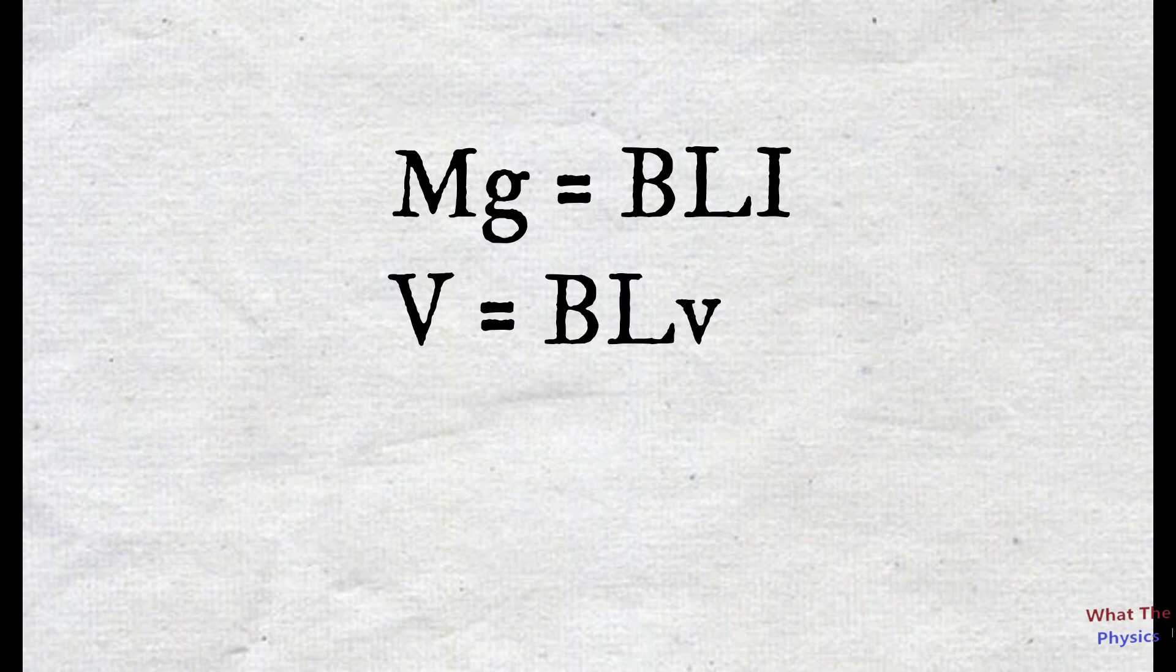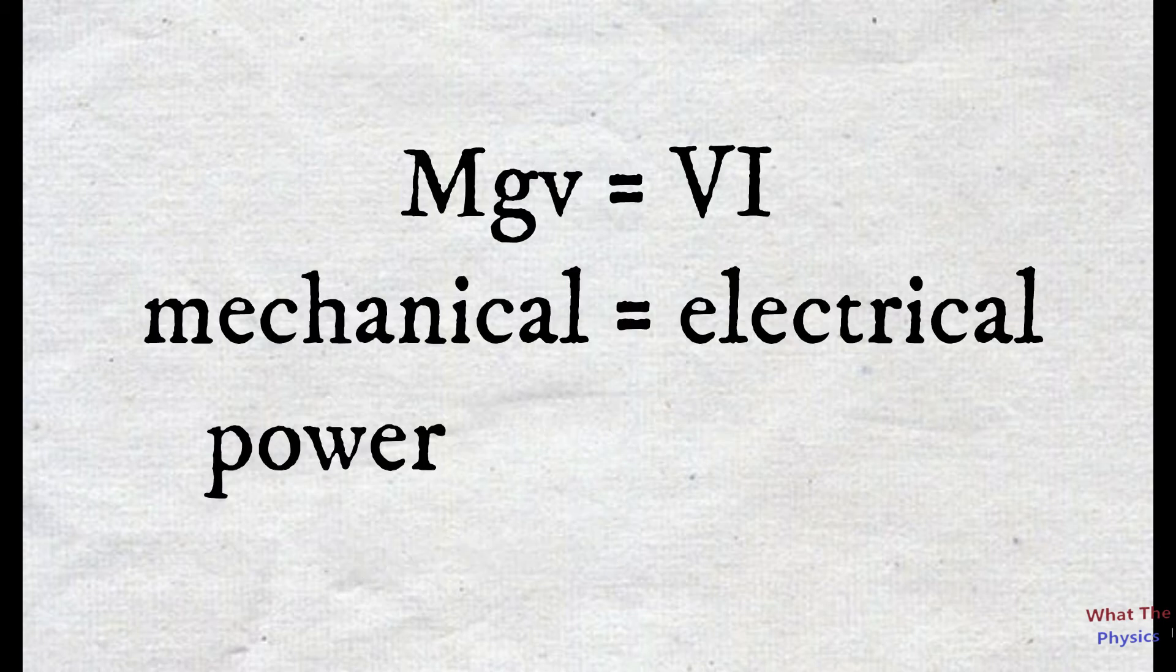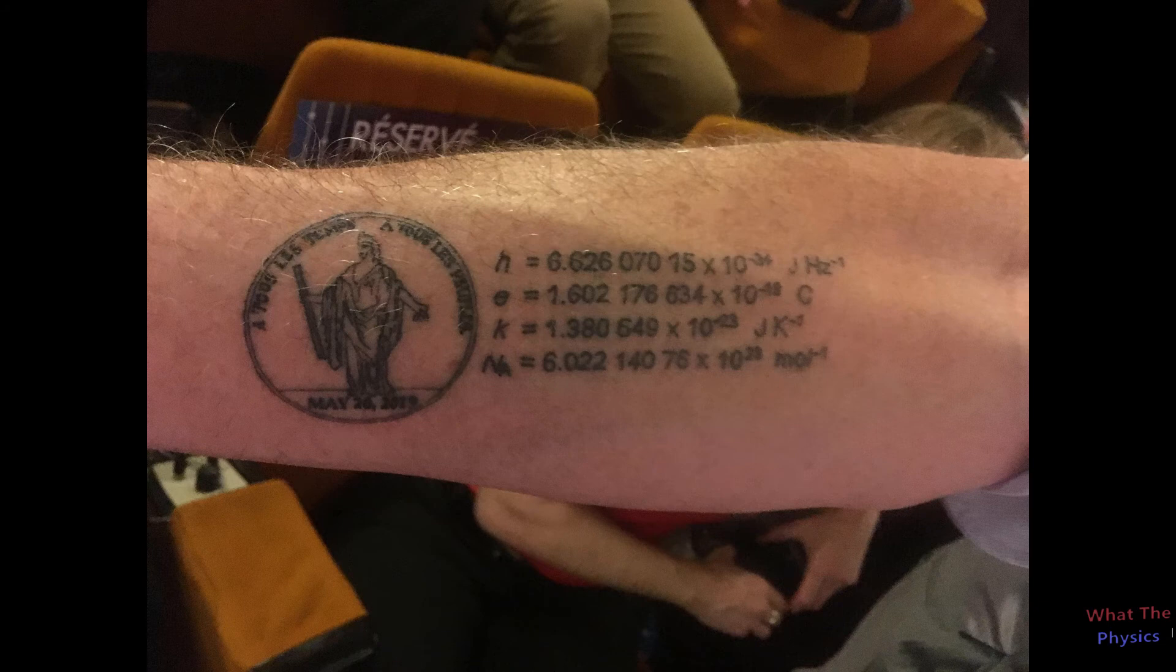Now using these two equations, we can calculate MgV = VI. Mass multiplied by acceleration due to gravity multiplied by velocity equals V induced EMF times current. In this equation, on the left-hand side there is mechanical power and on the right-hand side there is electrical power. But how will we go from this to Planck's constant?